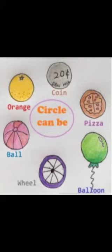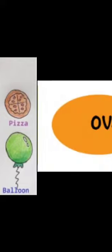Next shape — oval. What is the spelling of oval shape? O-V-A-L. Oval.